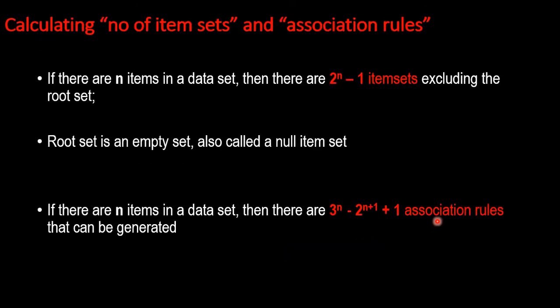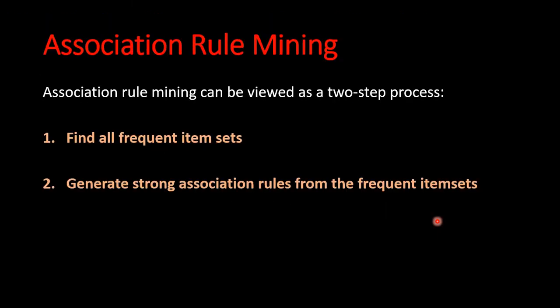Very simple, very important math that we need to understand. We need to calculate the number of item sets and the association rules as well, and for that we need to remember: if there are n items in the dataset, then there are 2 to the power of n minus 1 item sets, excluding the root set — which is an empty set also called a null item set. Also, if there are n items in a dataset, then there are 3 to the power of n minus 2 to the power of n plus 1 plus 1 association rules that can be generated.